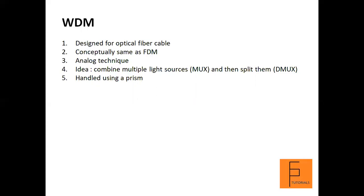Multiplexing allows us to combine several lines into one. WDM is conceptually the same as frequency division multiplexing, except that the multiplexing and demultiplexing involves optical signals through fiber optic channels. We are combining signals of different frequencies, but when using optical fibers the frequencies are very high. WDM is also an analog multiplexing technique used to combine optical signals. The basic idea is simple: we combine multiple light sources into one single light at the multiplexer and do the reverse at the demultiplexer. Combining and splitting of light sources is handled using a prism.